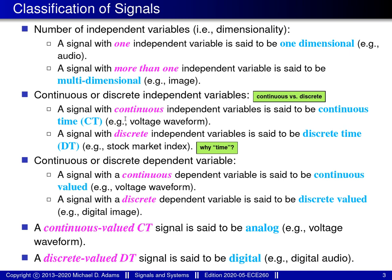A signal with continuous independent variables is said to be a continuous-time signal. An example would be a voltage waveform measuring electric potential versus time, where time is a real-valued quantity. A signal with a discrete independent variable is said to be a discrete-time signal. An example would be a stock market index, where the value is the closing value at the end of the trading day — defined only at certain particular points in time.